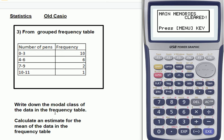In this video, we're going to show you how to use one of the older Casios to calculate an estimate for the mean data in a grouped frequency table.